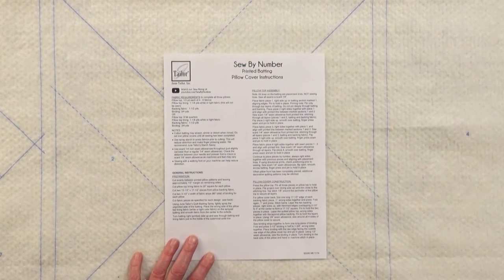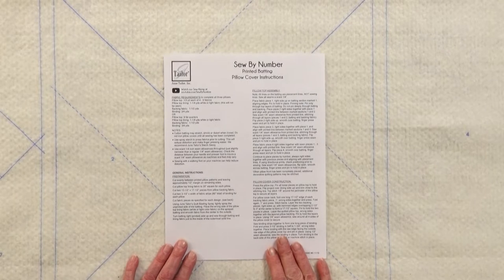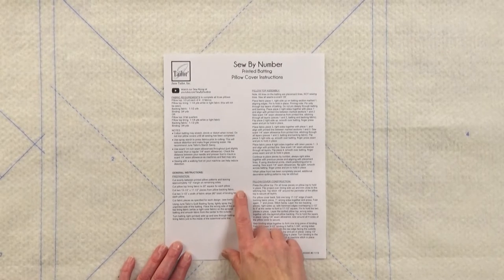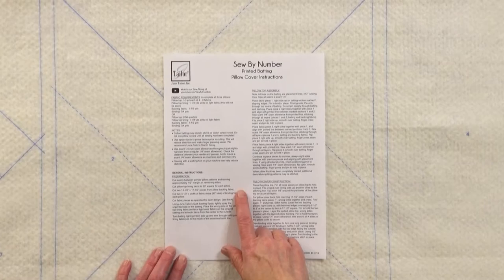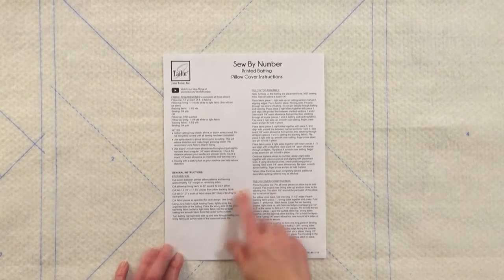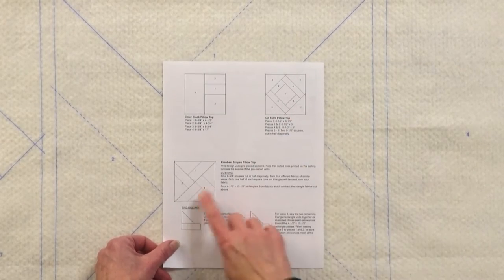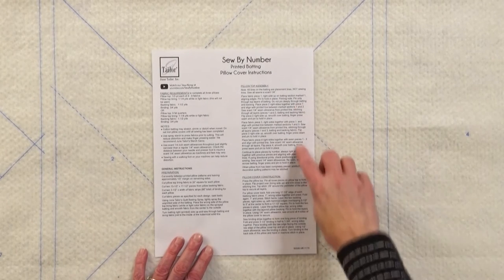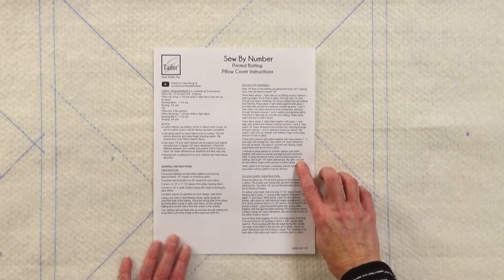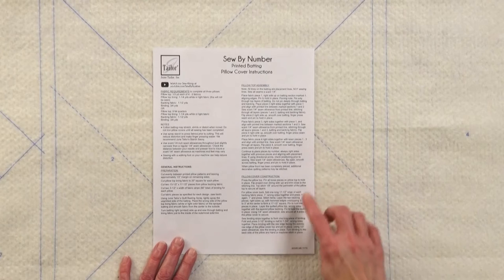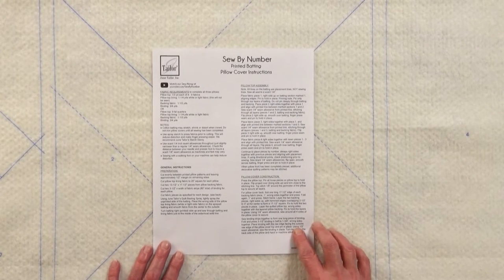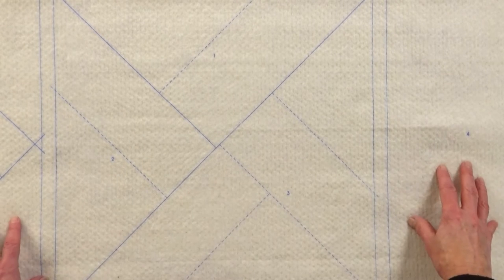Wrapped inside of the batting you will find the instruction sheets. The instruction sheets specify the amount of fabric that you need to cut for the backing, the lining, the binding, and on the back side what size to cut the fabrics for each individual pillow design. There's also assembly instructions which tell you how to sew the pieces by number and construct the pillow so that you can insert the pillow form. And of course it includes the three designs of sew by number batting.